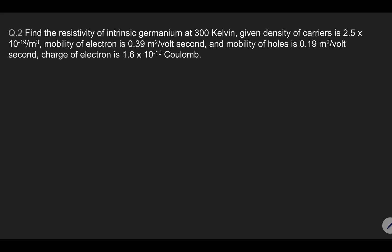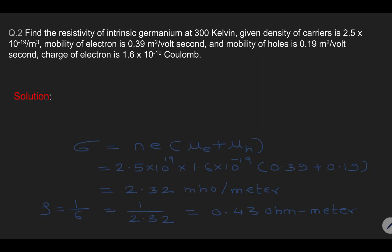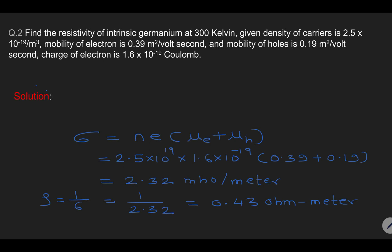Let us move to the next question. Here we need to calculate the resistivity. We are given the density of carriers, mobility of electrons, and mobility of holes. The formula we use is: conductivity equals density of charge carrier, times charge on each electron, times mobility of electron plus mobility of holes. Taking the reciprocal of conductivity gives resistivity, which comes out to be 0.43 ohm meter.